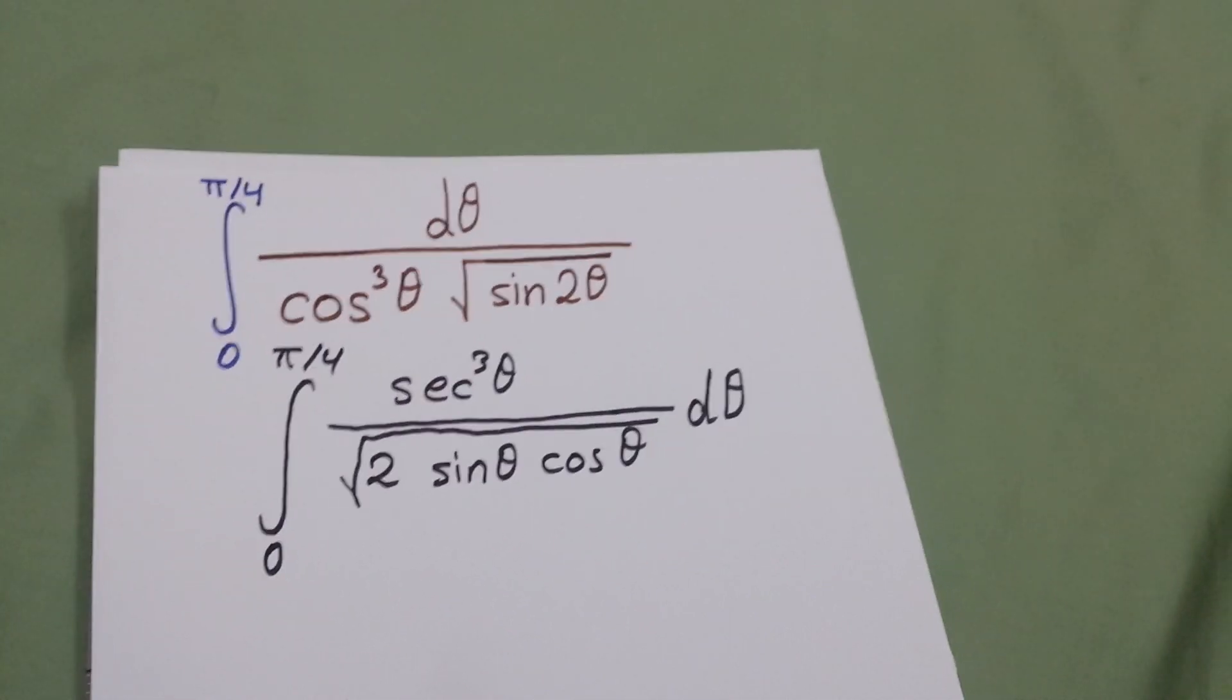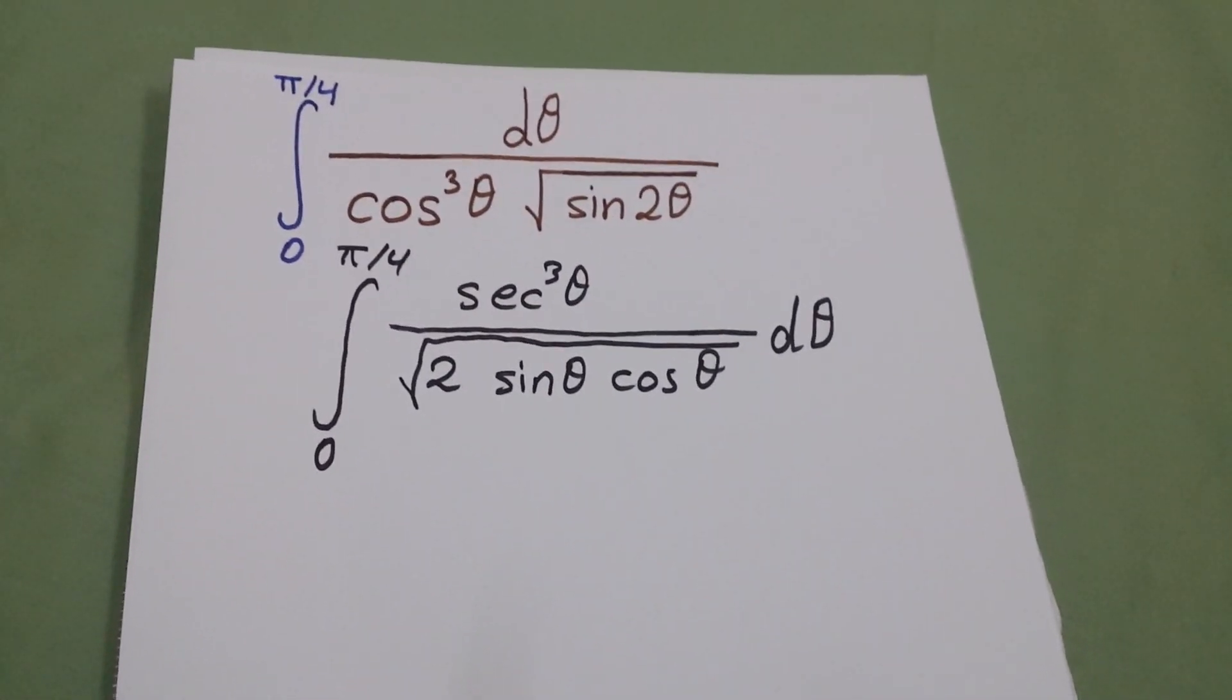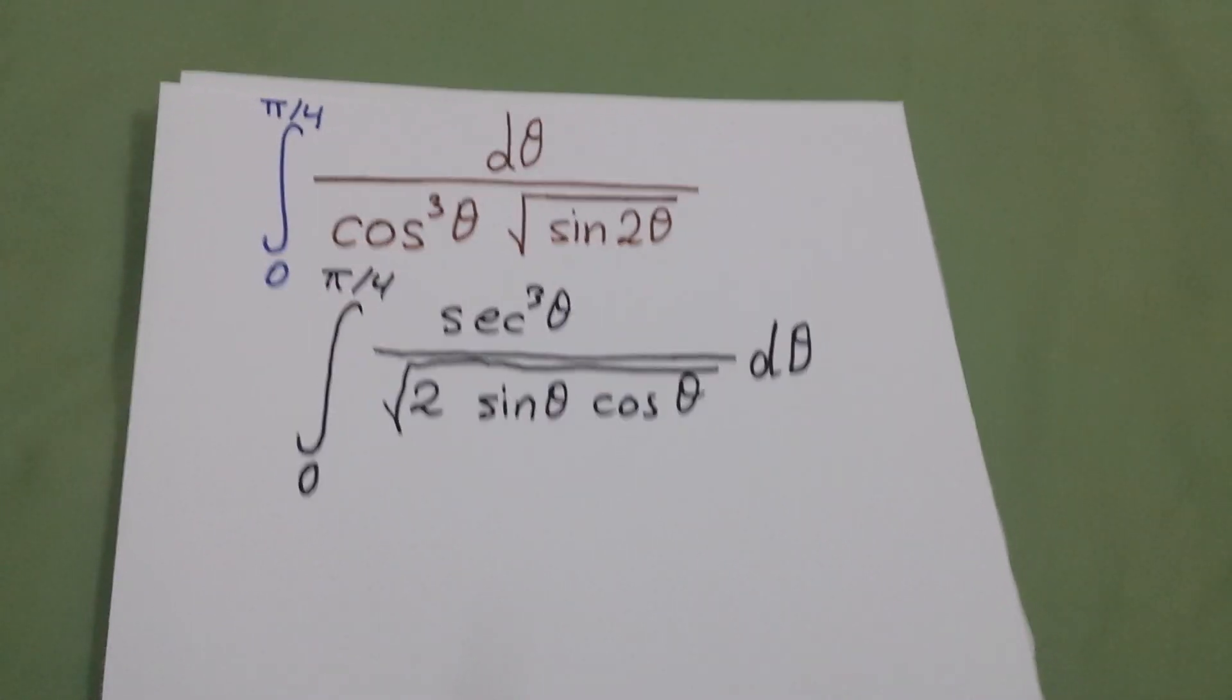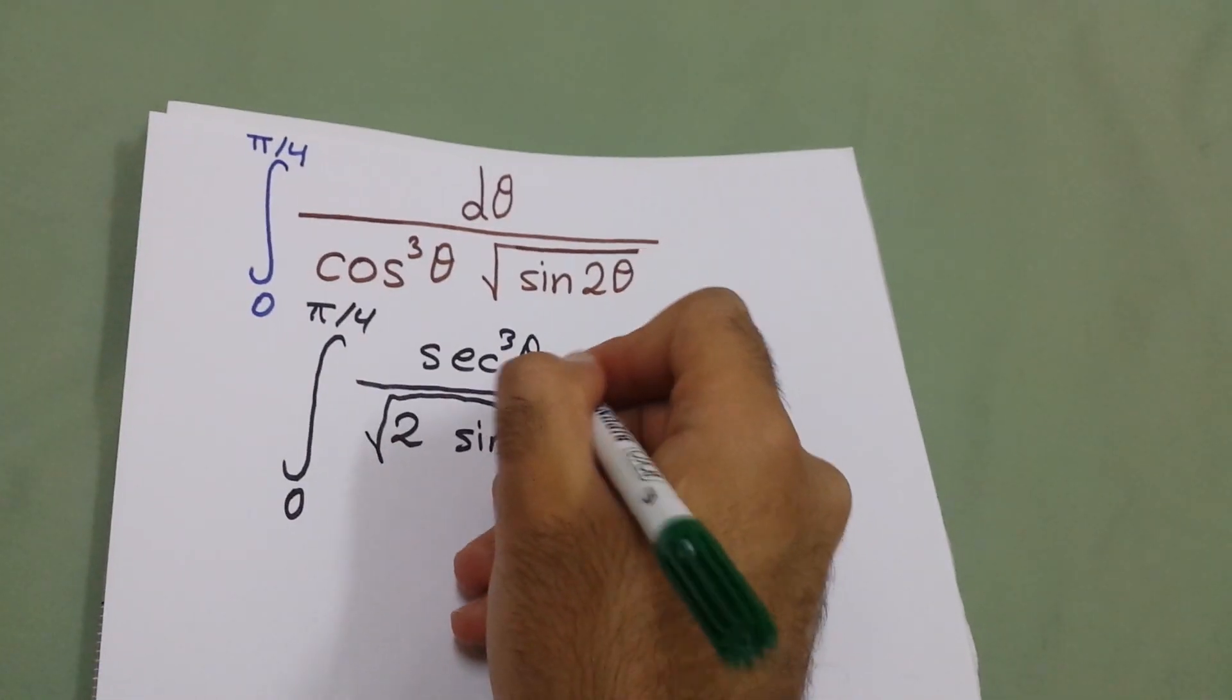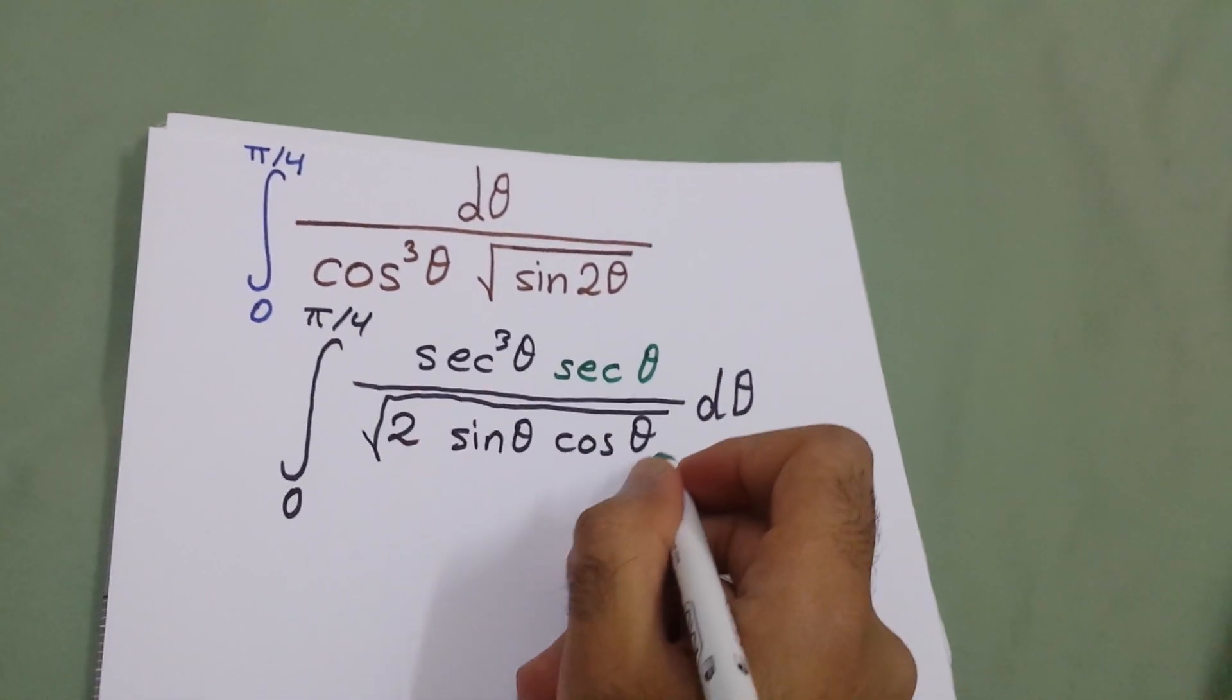After that we will multiply by secant theta, both numerator and denominator, secant theta.